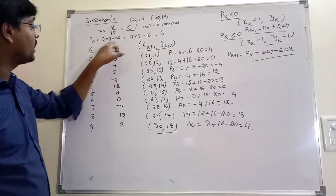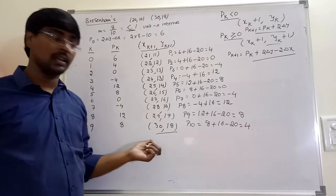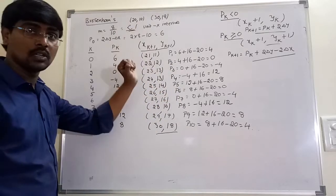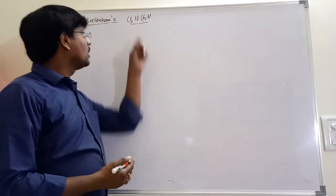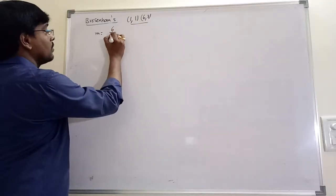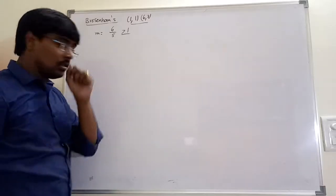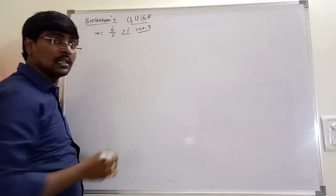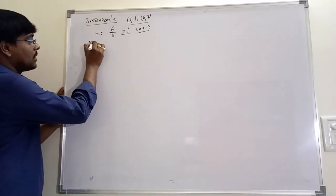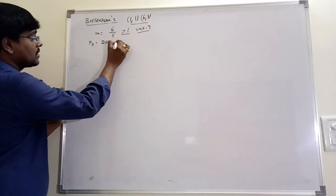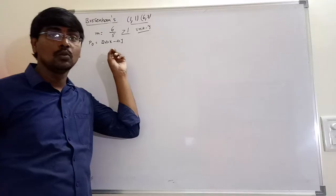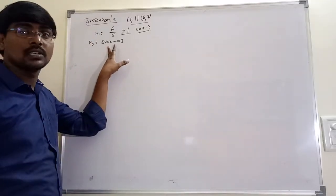This is the procedure for Bresenham's line drawing algorithm. Now consider one more example for slope greater than 1. Calculate slope: m equals (7 minus 1) divided by (something), so 6 by 1 is approximately 6, so slope value is greater than 1. Slope greater than 1 means unit y increment — each time y value is incremented by 1, we calculate x value. The initial decision parameter p0 is equal to 2 delta x minus delta y. Simply interchange delta x and delta y compared to the previous case.